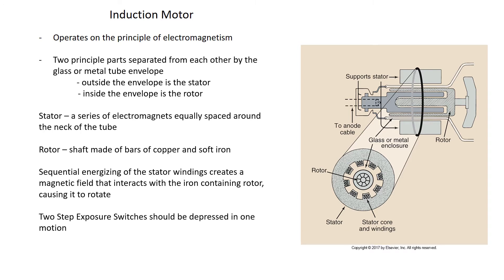Two-step exposure switches should be depressed in one motion. There is a common clinical habit of activating the rotor first, holding it down, giving breathing instructions, then pressing all the way down for the exposure — however, any textbook will tell you not to do that. You should push all the way down in one motion; the electrons won't reach the anode until the rotor gets to the correct speed, which happens very quickly.